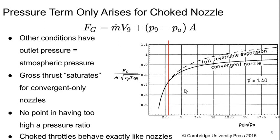What this tells us is that since you can see where these plots start to diverge is around a pressure ratio of about three for gamma 1.4, there's no point in having too high of a nozzle pressure ratio.